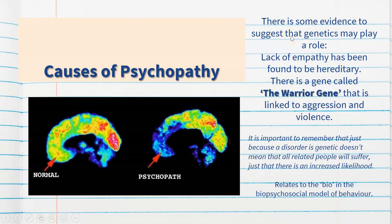There is some evidence to suggest that genetics may play a role in the cause of psychopathy. A lack of empathy has been found to be hereditary, and there is a gene called the warrior gene that is linked to aggression and violence. Studies on psychopaths show the warrior gene is far more common in those displaying psychopathy and aggressive behaviors. It's important to remember that just because a disorder is genetic doesn't mean all related people will suffer — it just means there's an increased likelihood.